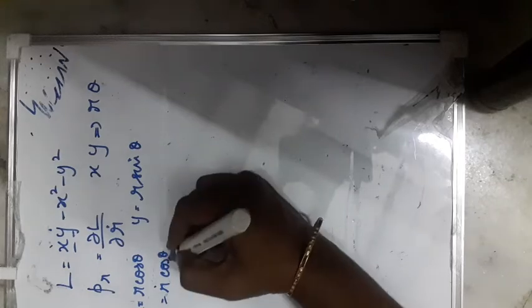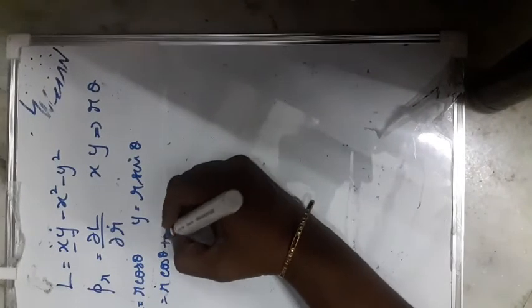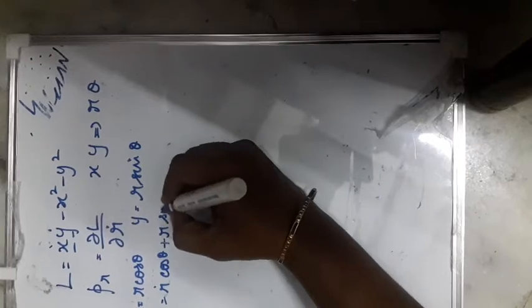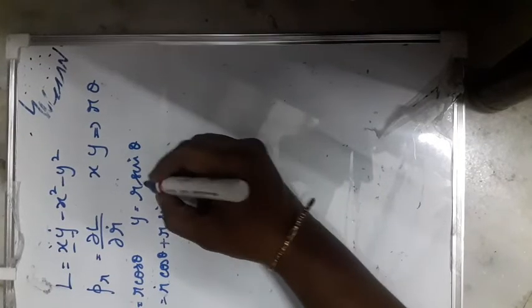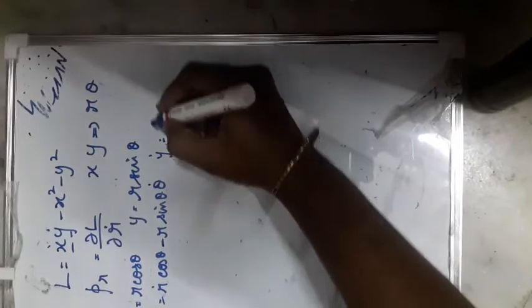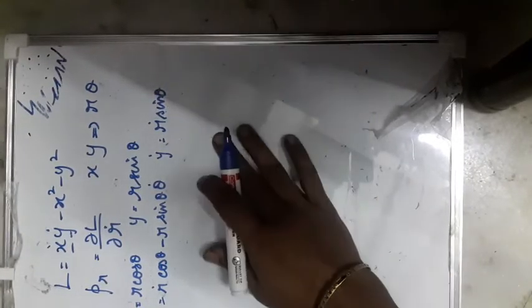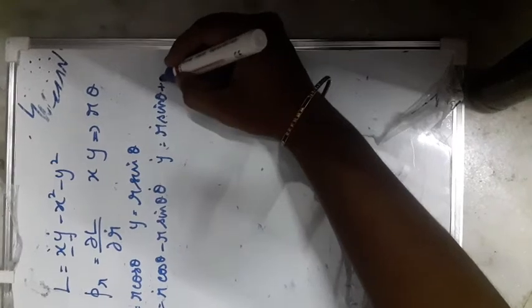We are having x_dot and y_dot in L. x_dot = R_dot cos θ, keeping θ constant differentiating R and keeping R constant differentiating θ, we get minus R sin θ θ_dot. Similarly, y_dot = R_dot sin θ + R cos θ θ_dot.